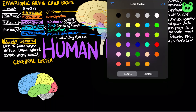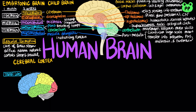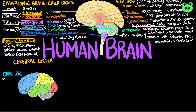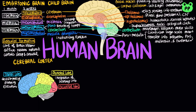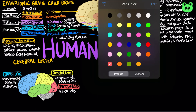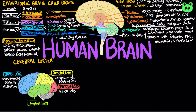Each side of the cerebral cortex has four lobes. The frontal lobe mainly functions in decision-making, planning, and execution. The parietal lobe mainly functions in integrating sensory information. The occipital lobe functions in processing visual information. And the temporal lobe functions in processing auditory information.